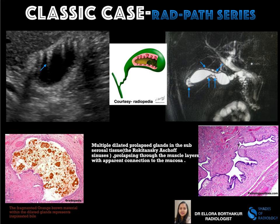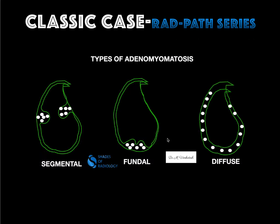You can see the pathological correlation here — the dilated Rokitansky-Aschoff sinuses are clearly visible. This is a classic case of gallbladder adenomyomatosis. Let us see a simple illustration.